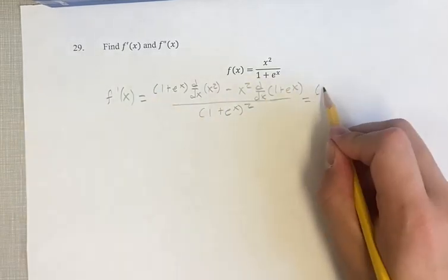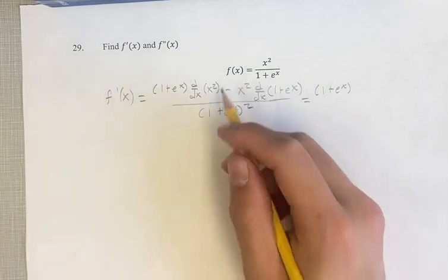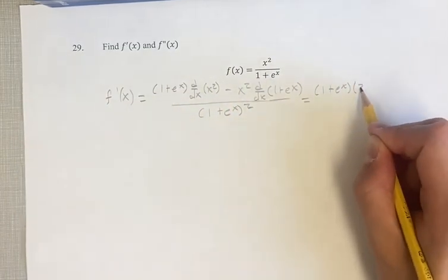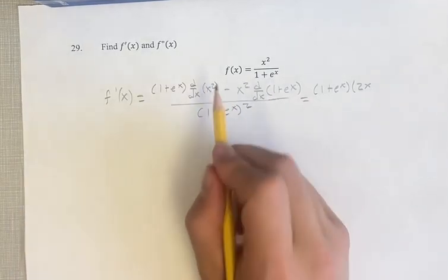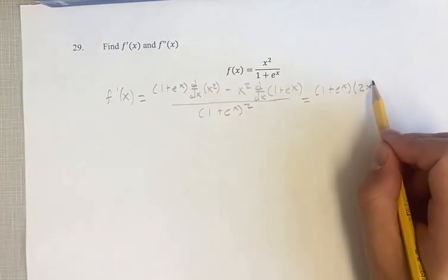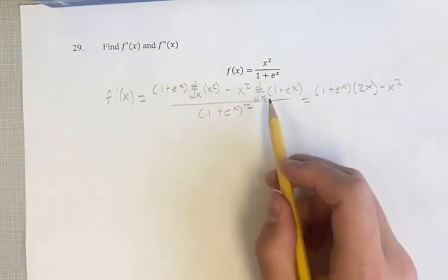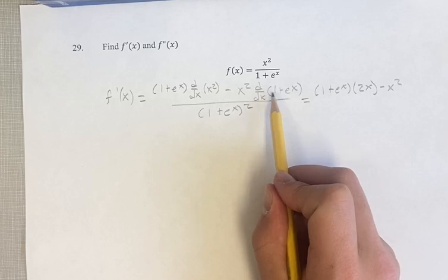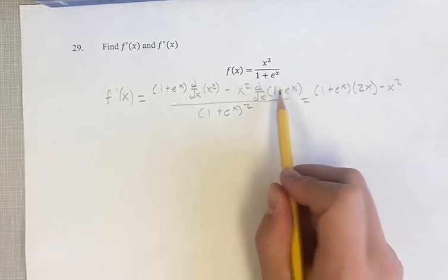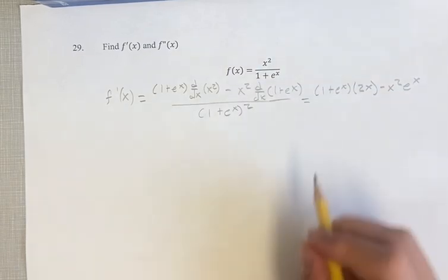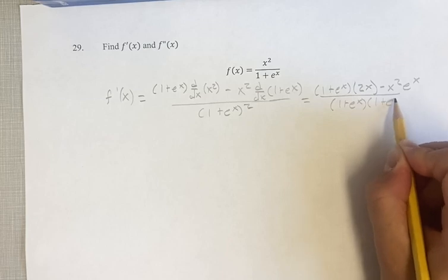So this is going to be equal to (1 + eˣ) times the derivative of x². We have a power function — bring down the exponent 2 into the coefficient, and the new exponent is 2 minus 1, which is 1, so x to the first is just x. Minus x² times the derivative of (1 + eˣ): the derivative of 1 is 0, and the derivative of eˣ is eˣ, so 0 plus eˣ is eˣ. All of this over (1 + eˣ) times (1 + eˣ).